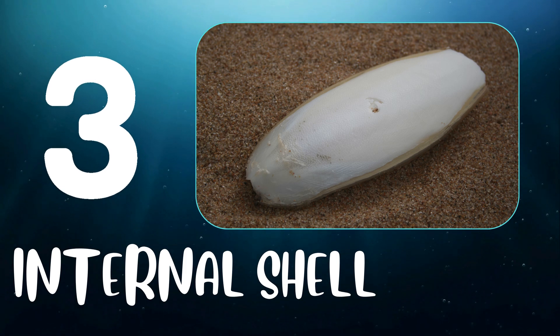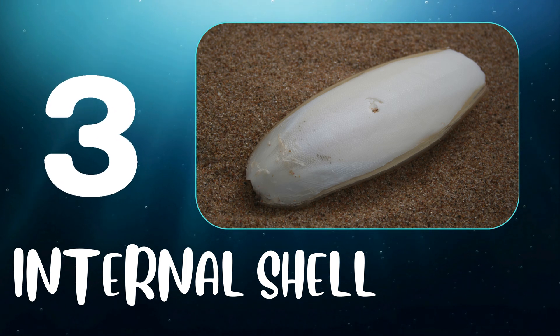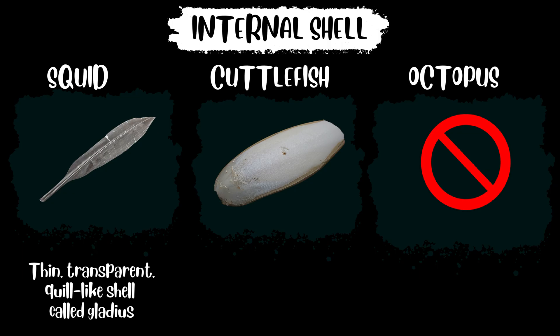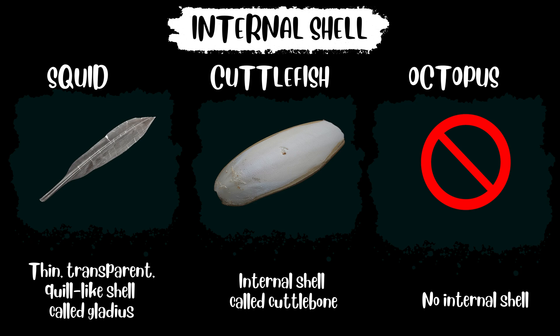Number three, internal shell. Squid has a thin, transparent, quill-like shell called gladius. Cuttlefish has a broad, flat, and oval internal shell called cuttlebone, while octopus has no internal shell.